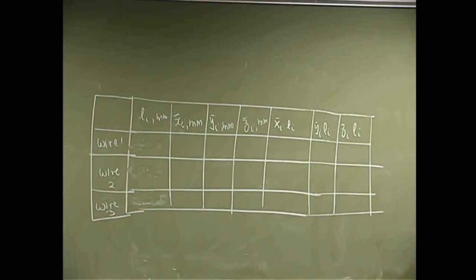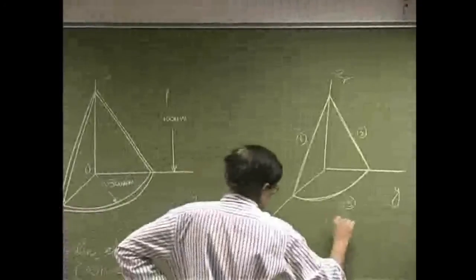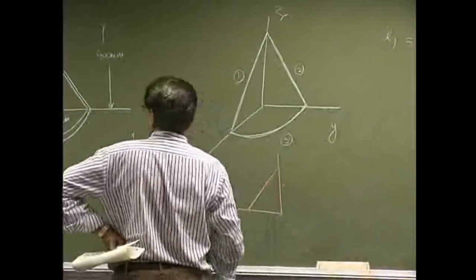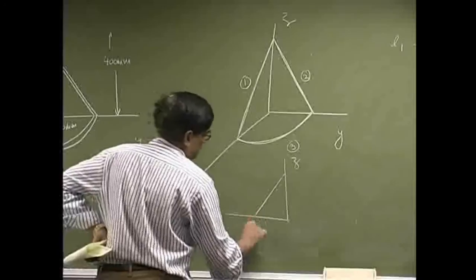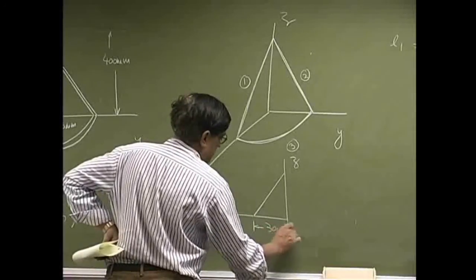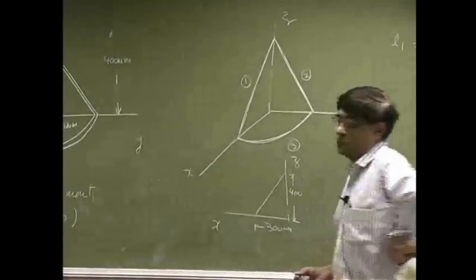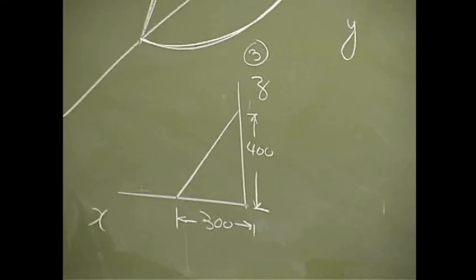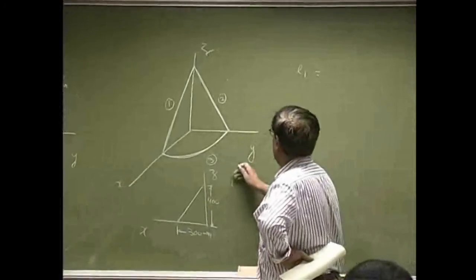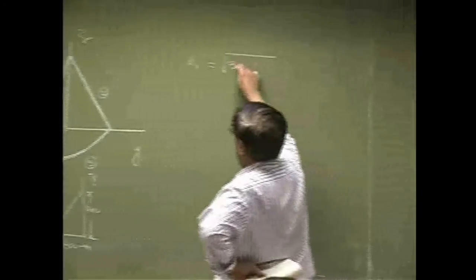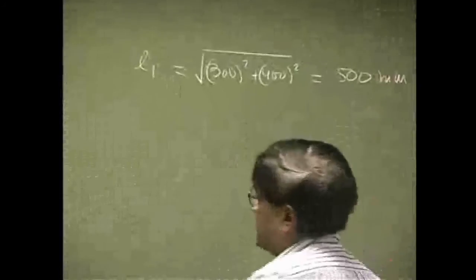We need the length of the first wire. If I look at the first wire by itself, I just do a projection. This is going to be axis x, and this is going to be axis z. This distance here is 300 and this distance here is 400. So if you look along the y-axis, this triangle makes it easy to see that the length L1 is simply the square root of 300 squared plus 400 squared, or 500 millimeters.